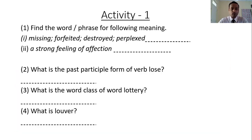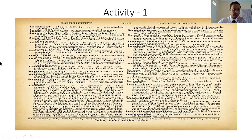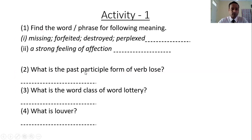What is the word class of the word 'lottery'? You need to find the word 'lottery' in the dictionary. Here is the word 'lottery'. The question asks the word class — the symbol 'n' is there, so the word class of the word 'lottery' is noun. The answer is noun.